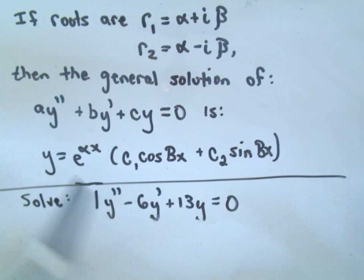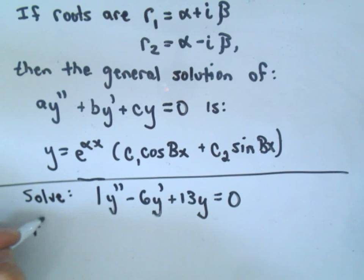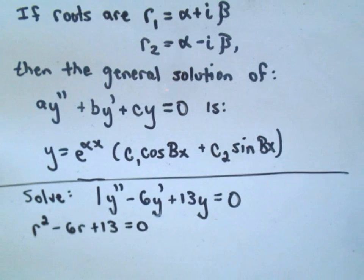Here we're going to solve y'' - 6y' + 13y = 0. We have to look at the equation r² - 6r + 13 = 0.